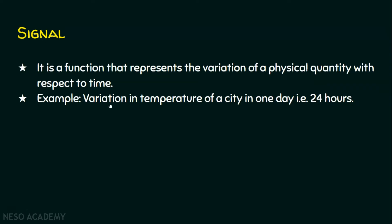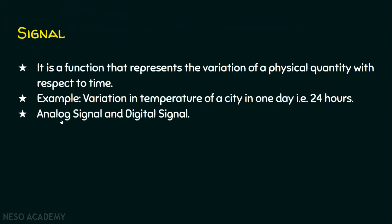The physical quantity here is the temperature of a city, and with respect to time — that is 24 hours — we can represent this as a signal. There are two kinds of signals: number one, analog signal, and number two, digital signal. We will see analog signal first and then move on to digital signal.